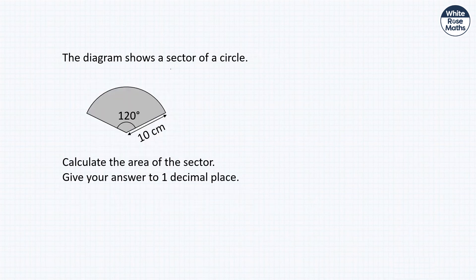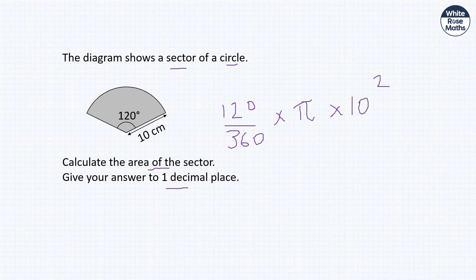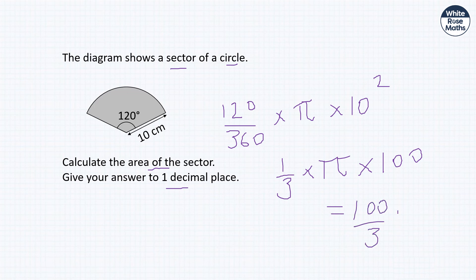A sector with angle 120° and radius 10 cm — work out the area to 1 d.p. Area = (120 ÷ 360) × π × 10² = (1/3) × π × 100 = 100π/3 ≈ 104.7 centimetres squared.